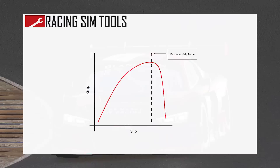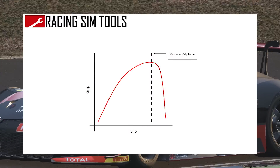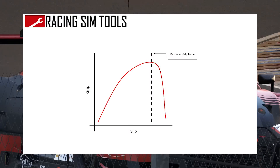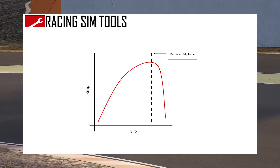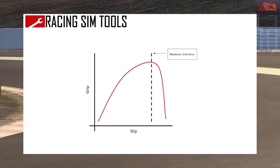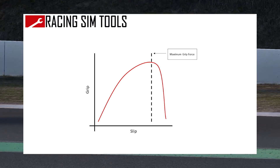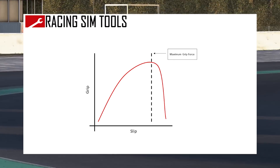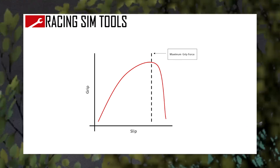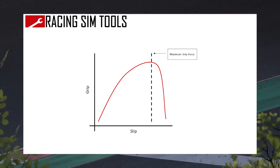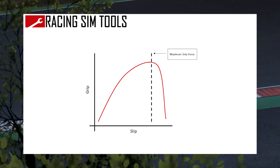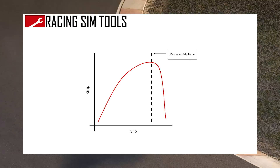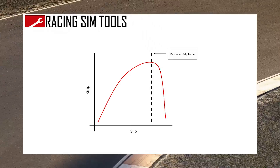This first graph that I want to show you guys is what we call a slip graph. What it shows us is the relationship between how much grip force the car and tire is producing versus what the slip angle of the tire is, or how much slip the tire is producing. If you look at the Y axis, this is the grip force, and the X axis is the slip.